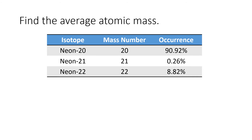Let's calculate the average atomic mass for the element neon. It consists of three isotopes: neon-20, neon-21, and neon-22. 91% of the neon isotopes are neon-20, which has an isotopic mass very close to 20 atomic mass units, so we'll use the mass number for the mass. Since 91% of the atoms have a mass of 20, we'd expect the answer to be pretty close to 20. The other two isotopes weigh more, so it'll be slightly bigger than 20. Our prediction is that the answer should be just a little bit bigger than 20.